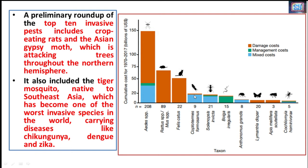Another invasive species causing great damage is the brown tree snake, also known as the brown cat snake. It has been found that this brown tree snake feeds on native bird and lizard species, causing serious loss to pollinators as well. Due to the absence of pollinators, it is causing the loss of native species. Then we have the boll weevil, which feeds on cotton buds and flowers. Next is the gypsy moth.